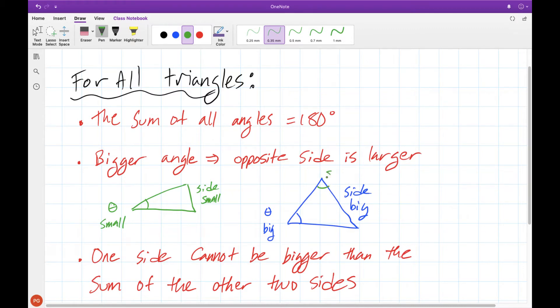If for instance this angle here is smaller, then the side across from it needs to be smaller than this side over here. So if this angle up top is smaller than this angle over here, then the side across from it in green needs to be smaller than the side over here in blue.